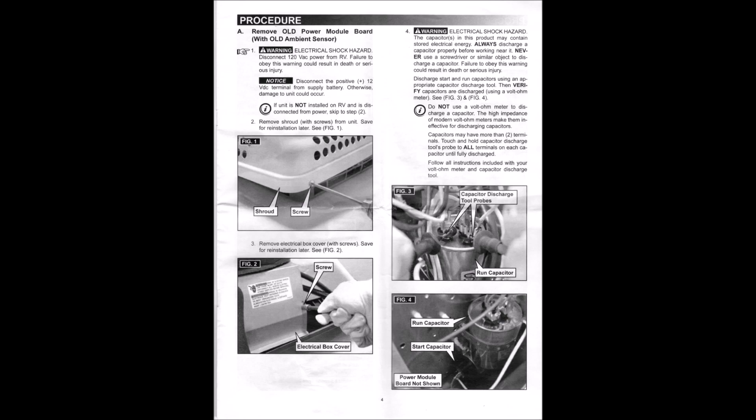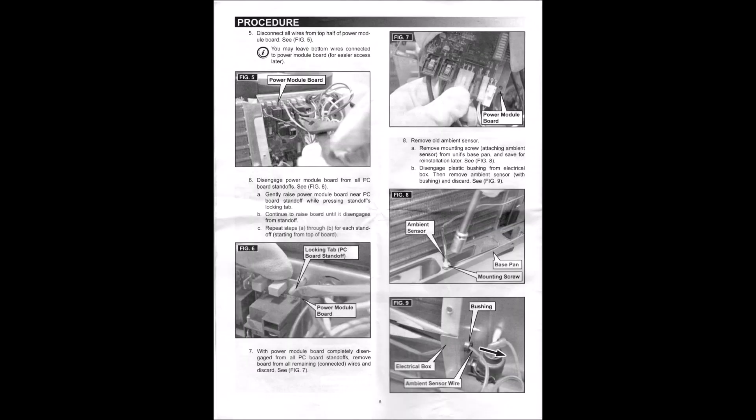Alright, then we're going to remove the wires on top of the old control board as you see in figure five here. Then basically step six is take the control board off the mounting place. So figure six and seven, take the control board off. Figure eight there is remove the old ambient sensor. There's one screw for the one wire.